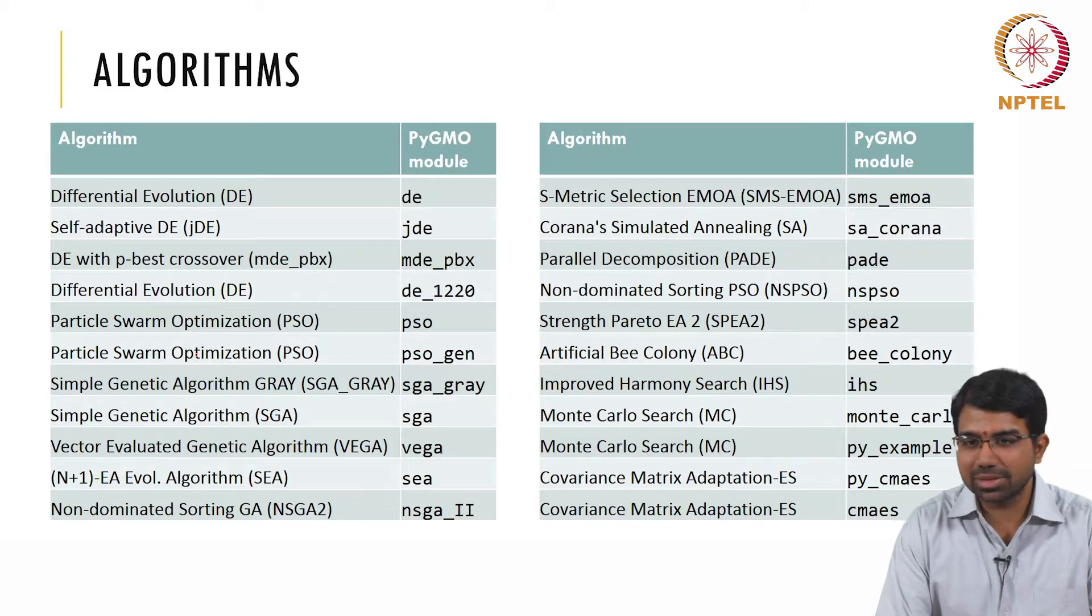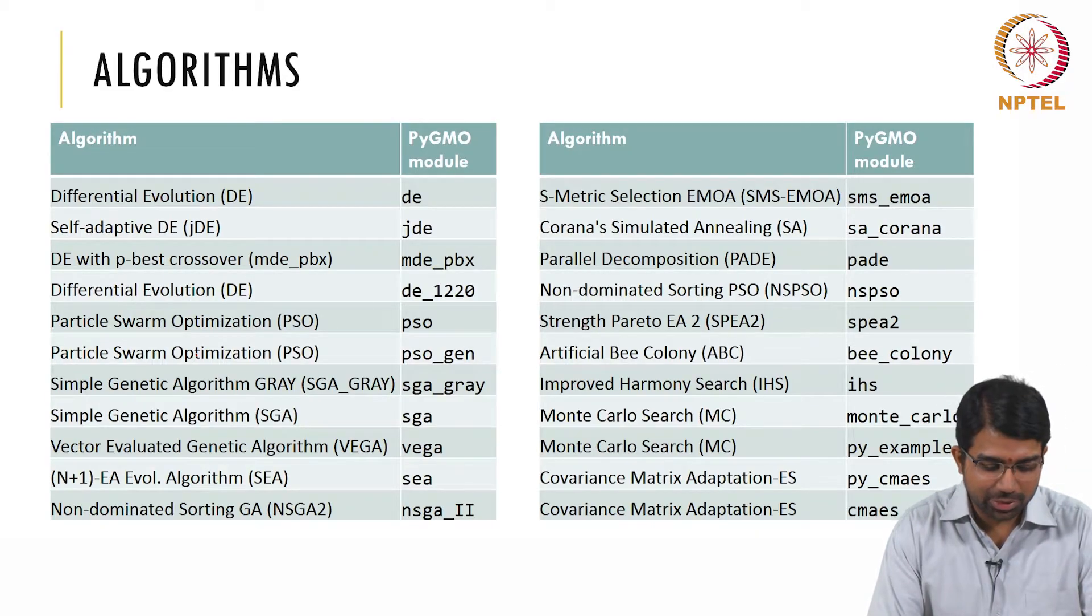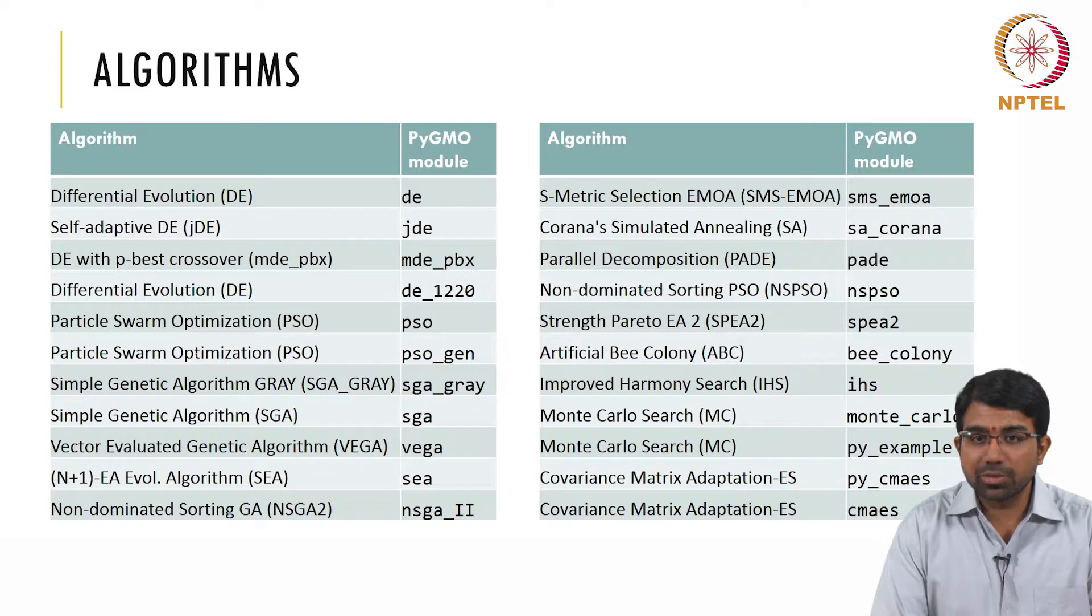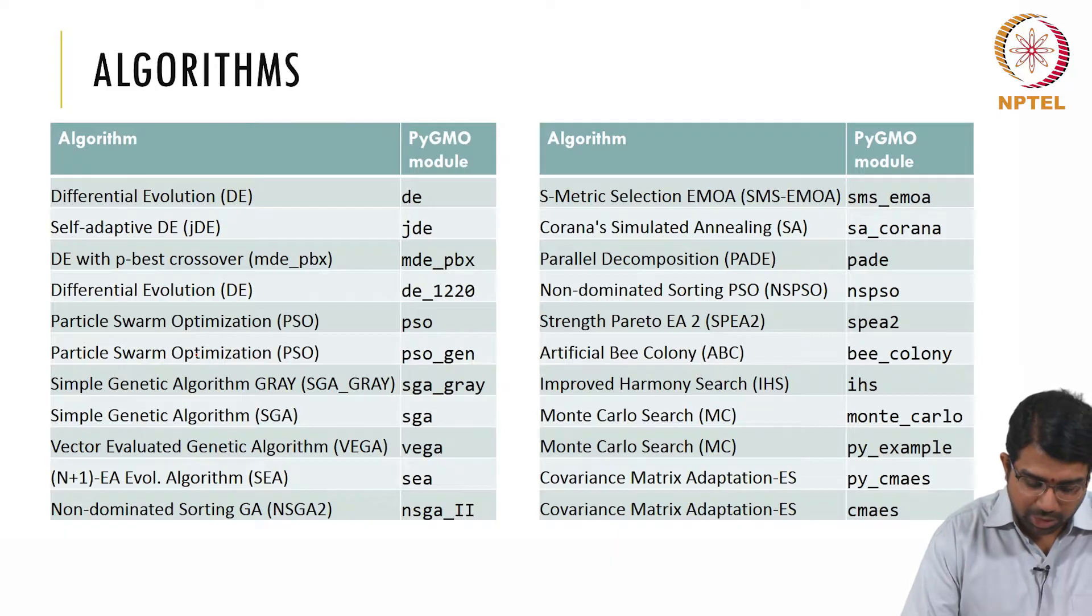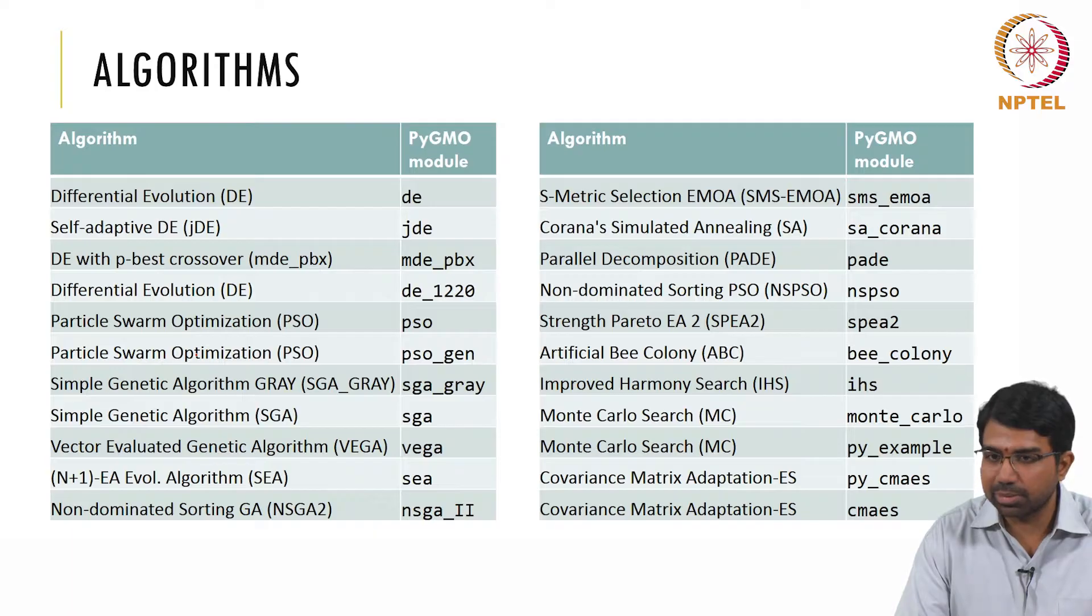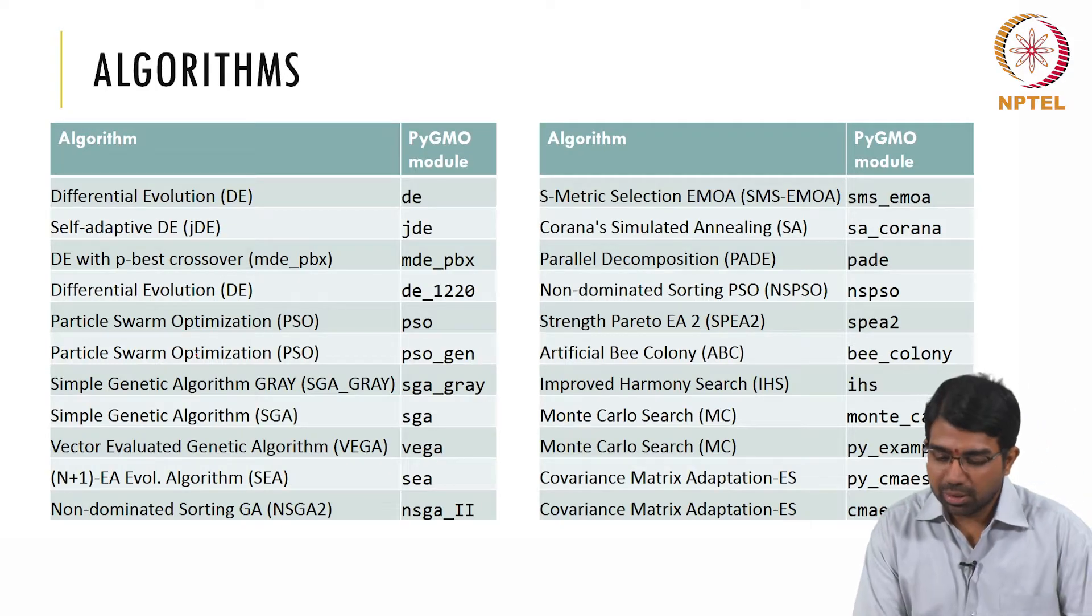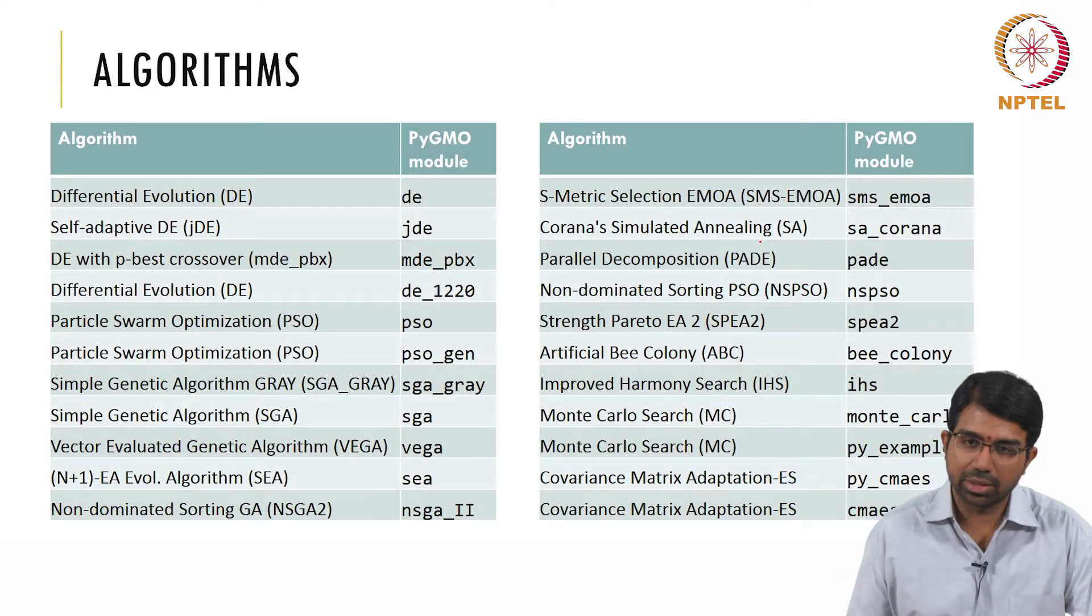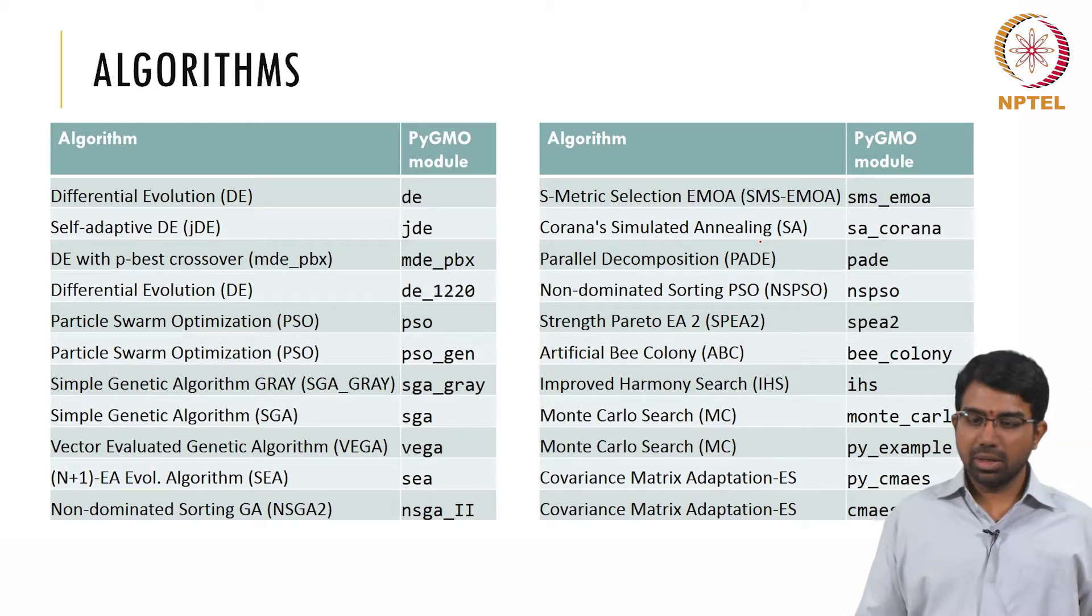What are the algorithms? Nice assortment of algorithms. You have differential evolution, self-adaptive DE, DE with P-based crossover, this is something we found to be very useful when we studied a few bio models. Of course, particle swarm optimization and simple genetic algorithm and N plus 1 evolutionary algorithm or evolutionary strategy. These are all popular algorithms and it also has a particular flavor of simulated annealing called Corana's simulated annealing algorithm.